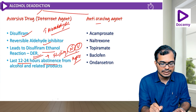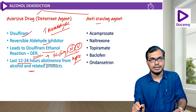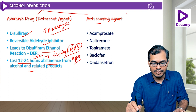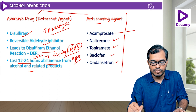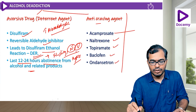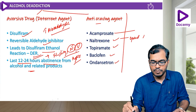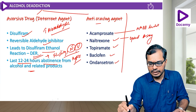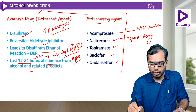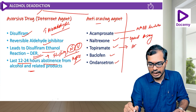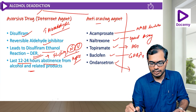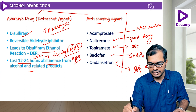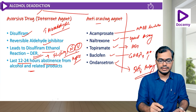Disulfiram is started after at least 12 to 24 hours of abstinence from alcohol and related products. For anti-craving agents, we have acamprosate, naltrexone, topiramate, baclofen, and ondansetron. Naltrexone is an opioid antagonist, acamprosate is an NMDA modulator, topiramate is an anti-epileptic, baclofen is a GABA-B agonist, and ondansetron is a 5-HT3 antagonist.